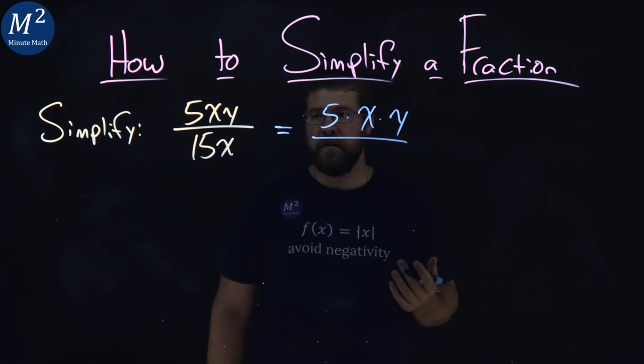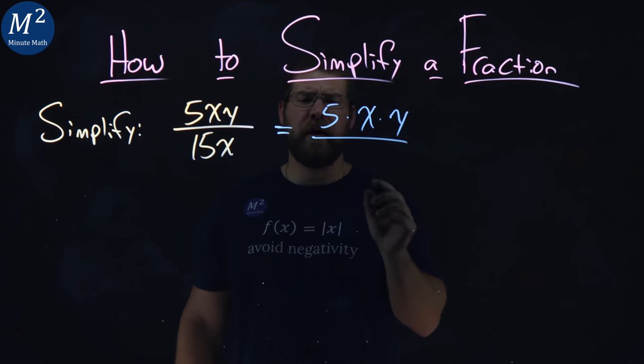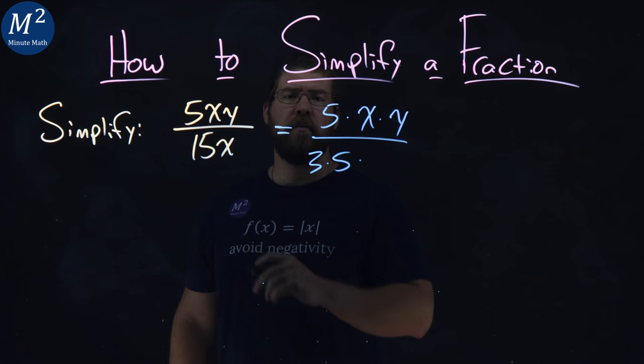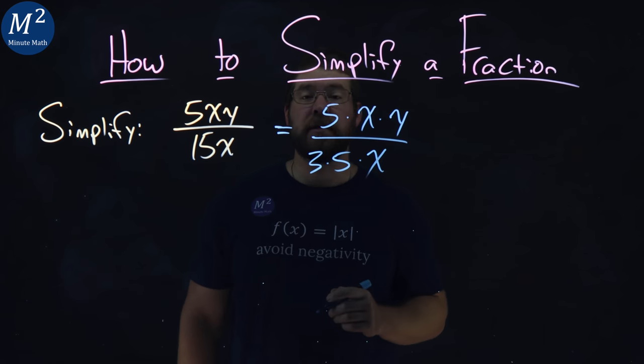Now the denominator, 15 - well, it can be broken down. That's 3 times 5, times what's left over, which is just an x.